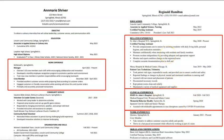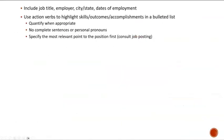Those are some important options to keep in mind when considering how to format your experience. When listing your experience you want to be sure to include your job title, the employer name, the employer location (city and state), and the dates of employment. You'll also want to list strong bullet points for any experience where you can describe skills, outcomes, and accomplishments that relate to the job you're applying to. Those bullet points will begin with strong action verbs.